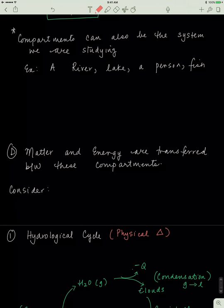So like I said, compartments can also be small scale. For example, you can look at a river system, you can look at a lake, and if you even want to go smaller than that, you can. You could look at a person, you could also look at a fish, you could look at a bear, anything.